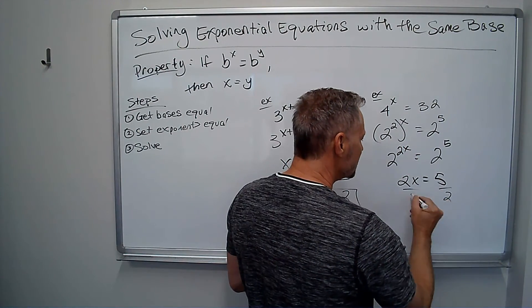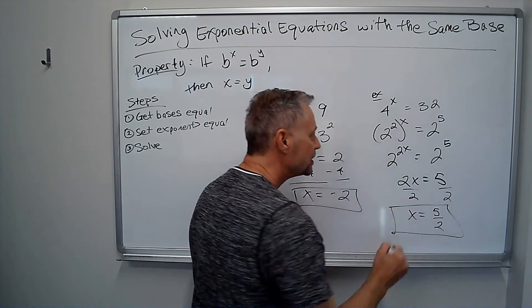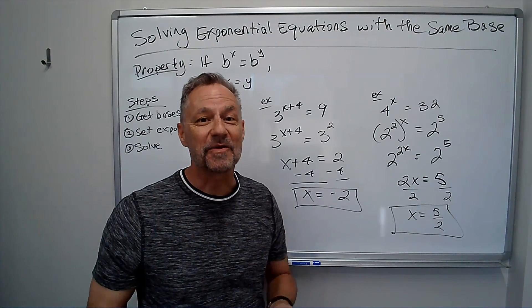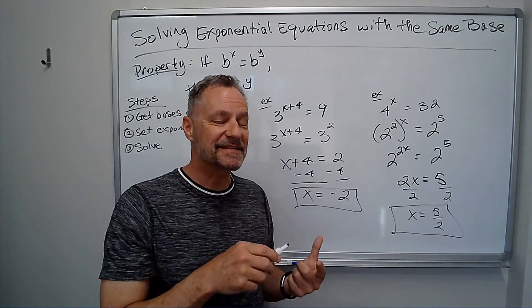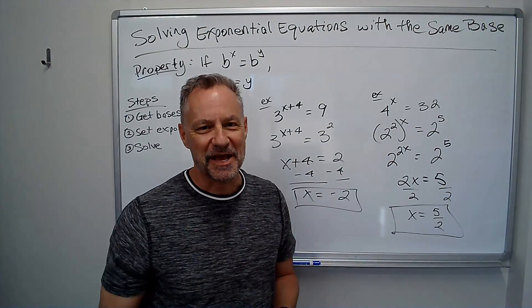And now I just divide both sides by 2, I get x equals 5 halves, and that's my answer. Okay, so get the bases to be the same, then the exponents have to be equal. Solve from there, and it'll make it nice and simple.